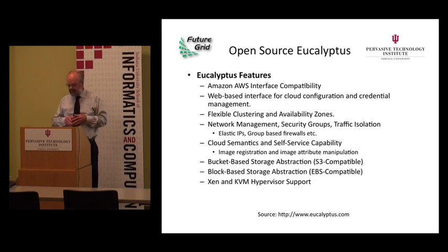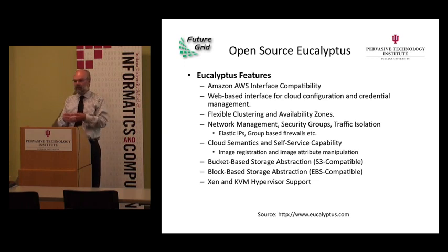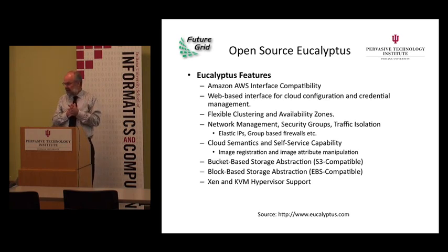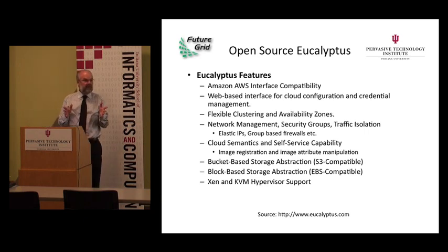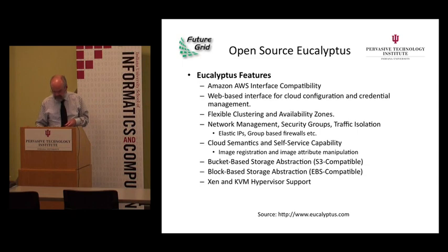Eucalyptus is to a large extent an open source analog to Amazon Web Services. Rich will be careful to say they didn't reverse engineer Amazon — they simply looked at how Amazon behaved and at the API, and built an open source product so that if a program runs on Amazon it will run on Eucalyptus and vice versa. It has a storage abstraction that is S3 compatible and a block-based storage abstraction that is Elastic Block Storage compatible. Eucalyptus is an extremely popular open source VM that we expect very many people will use on FutureGrid.